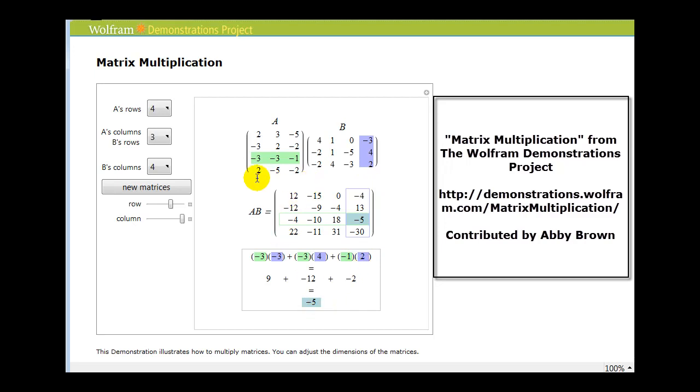We're always going to select a row from the first matrix and a column from the second matrix. If you're having difficulty multiplying matrices, you may want to go to this website and check out this free demonstration. I hope this helps.